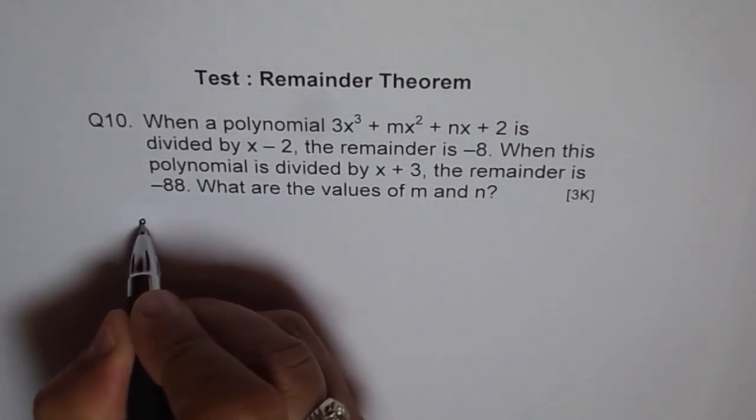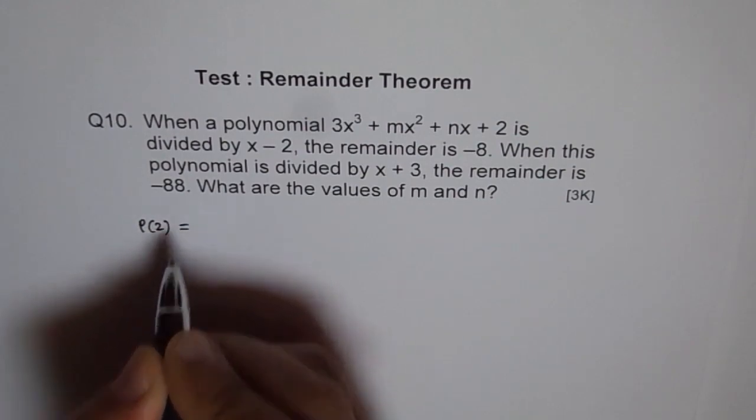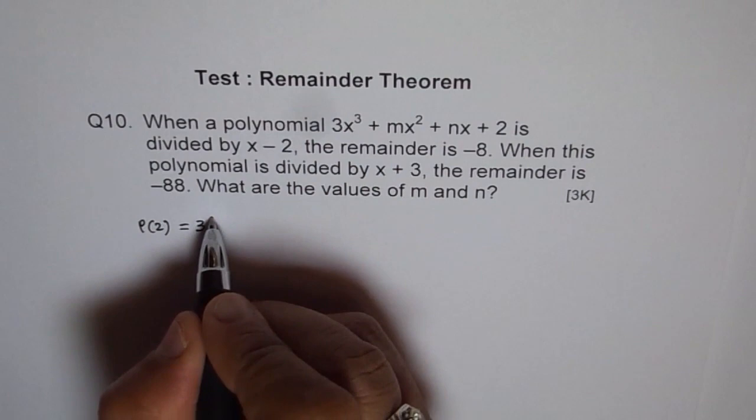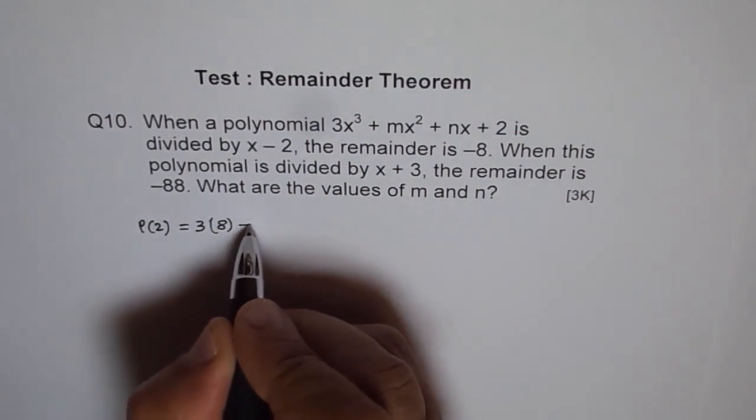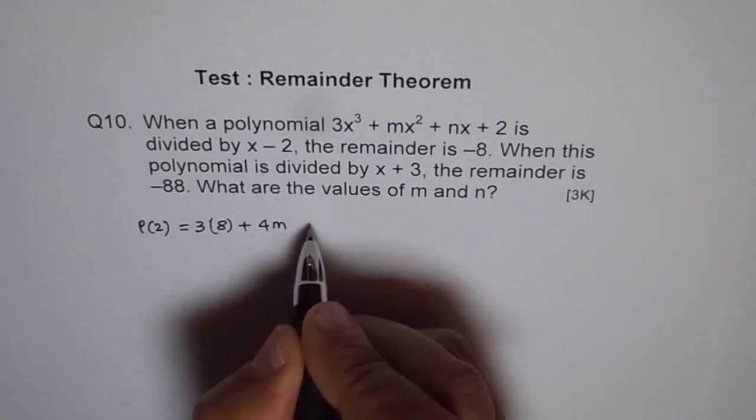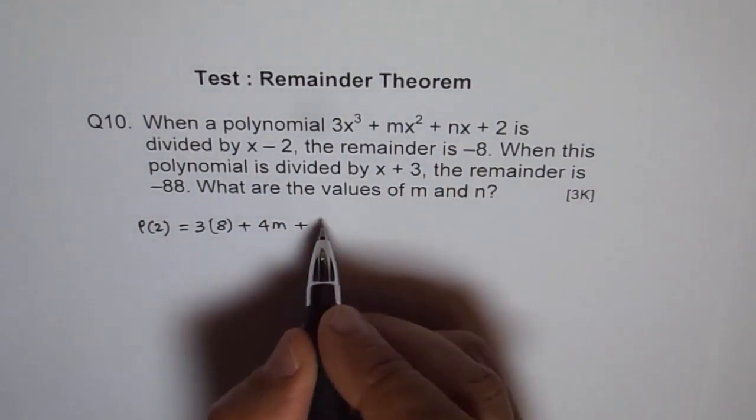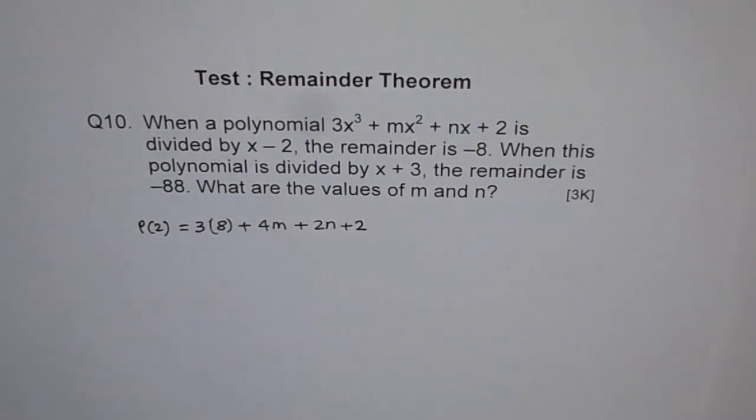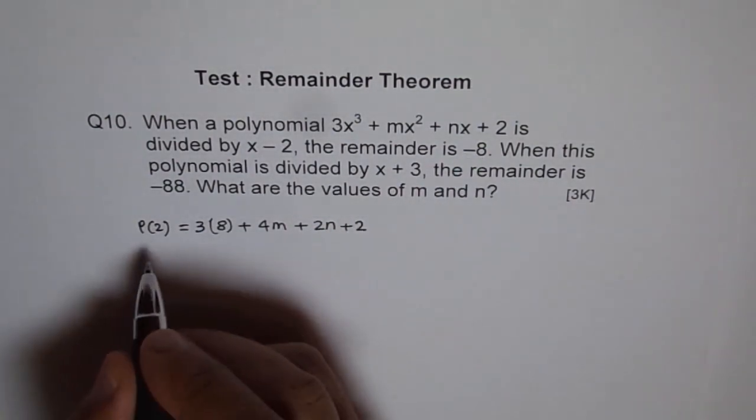So we say p(2) equals, let's plug 2 here. So 3, 2³ is 8, plus 2² is 4, so let me write 4m directly, plus 2n plus 2. So what is p(2)? It's -8.